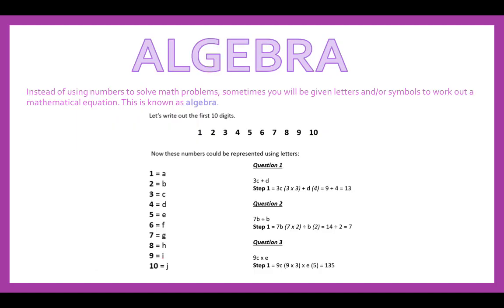So algebra. Instead of using numbers to solve math problems, sometimes you will be given letters and or symbols to work out a mathematical equation. This is known as algebra. Let's write out the first 10 digits: 1, 2, 3, 4, 5, 6, 7, 8, 9 and 10. Now instead of using numbers, these could be represented using letters. So 1 could be A, 2 could be B, 3 could be C and so forth.